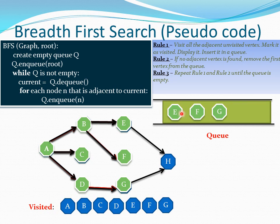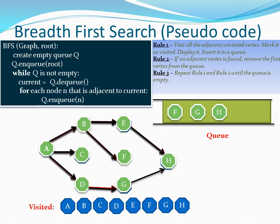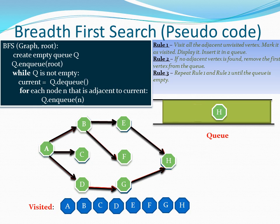We look at the next node E. E has one adjacent vertex, so we enqueue it. E doesn't have any other vertices, so we remove it from the queue. Now we have F. F doesn't have any adjacent vertex, so we remove that as well. G has one adjacent vertex but it's already been visited, so we don't need to insert it into the queue again. We remove G from the queue. Finally, H is the only vertex in the queue, it doesn't have any adjacent vertex, so we dequeue it as well. Now the queue is empty and we have completed the full iteration, visiting all the vertices.